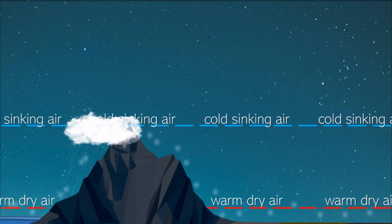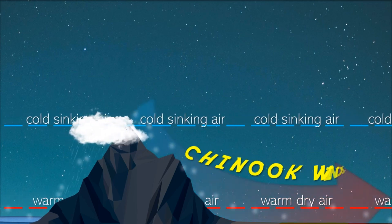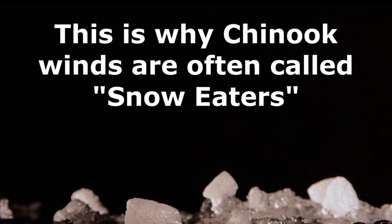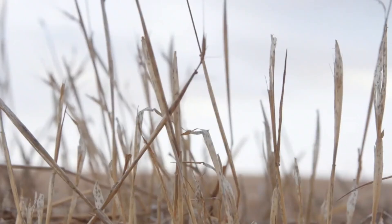This warm, dry, descending air is what's known as Chinook winds. These winds can melt a foot of snow in one day, and in the absence of snow can dry up vegetation.